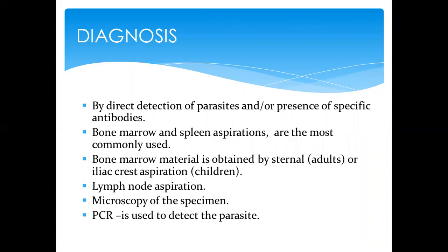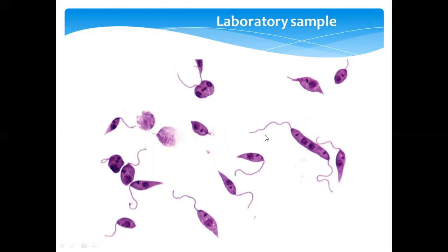For diagnosis, clinical presentation can help, but mostly microscopic evaluation gives a good indication. Samples can include PCR, lymph node aspiration, bone marrow material, or spleen aspiration. Direct detection of the parasite or the presence of specific antibodies can also be used. This is the laboratory sample of amastigotes gathered from blood.